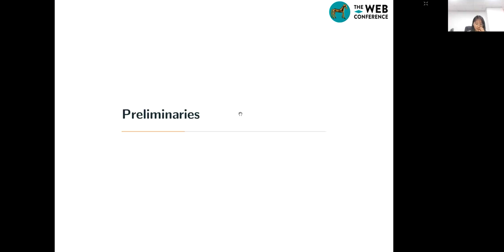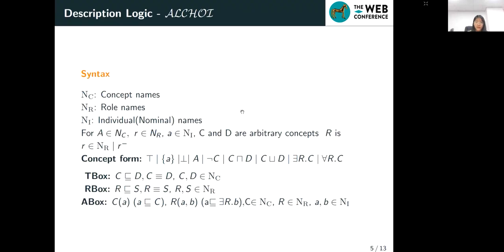Then I will introduce some preliminary knowledge: ALCHOI ontology. An ALCHOI ontology consists of T-Box, R-Box, and A-Box. Description logic as logical language has syntax and semantics. First, let me introduce the syntax of ALCHOI.